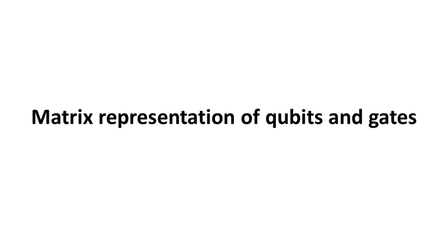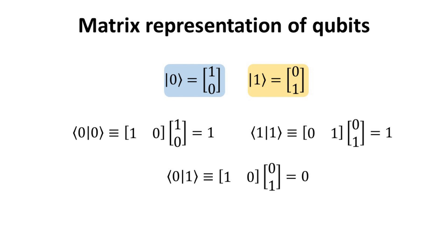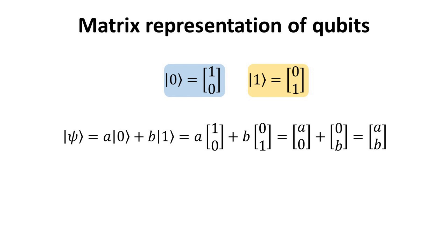Part 3. Matrix representation of qubit and gates. Mathematically, the 0 and 1 kets can be represented as two-dimensional column vectors as shown. It is straightforward to see that they form an orthonormal basis set which any state vector psi can be represented as a linear combination of these basis states. We say that 0 and 1 kets span the 2D Hilbert space, which is the vector space of two-dimensional complex-valued vectors, where the qubit live.